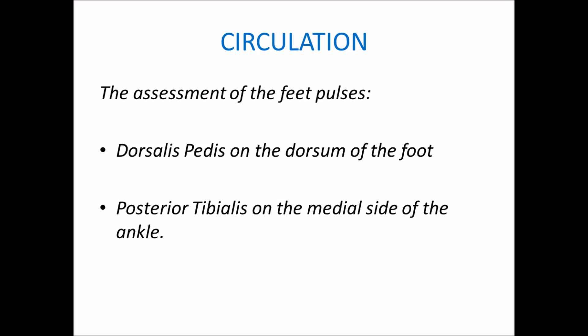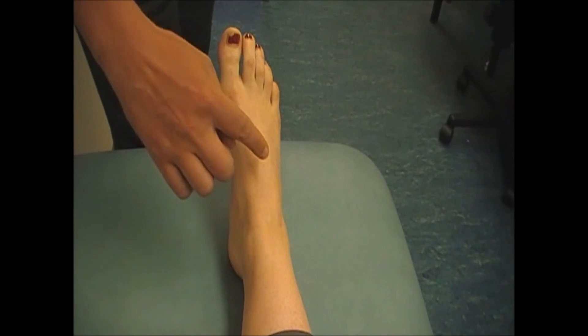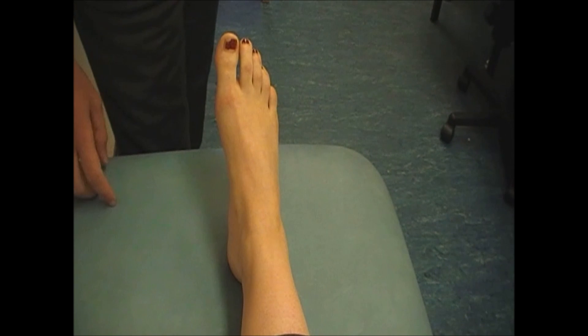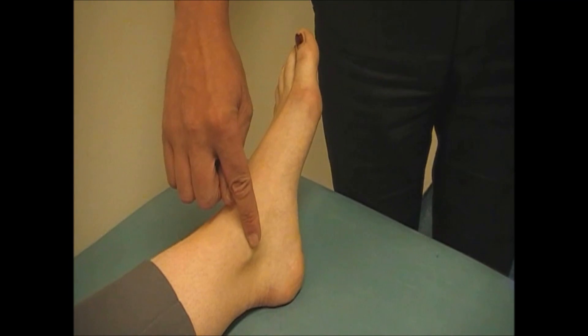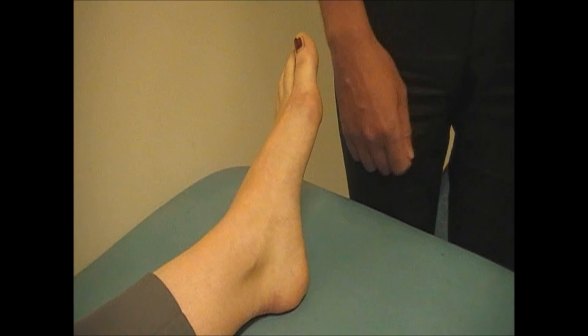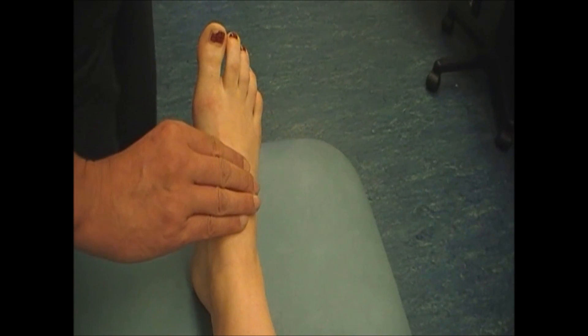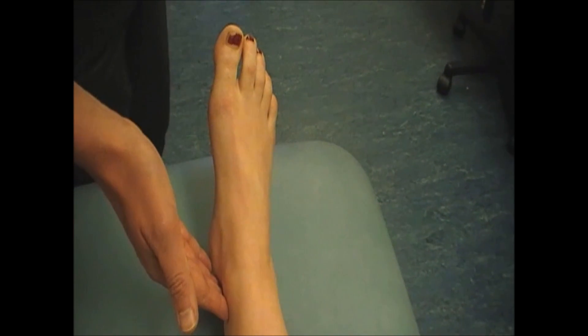The assessment of circulation focuses on the feet pulses: the dorsalis pedis on the dorsum of the foot and the posterior tibialis on the medial side of the ankle. The dorsalis pedis usually runs between the first and the second metatarsal bones. The posterior tibialis runs approximately two centimeters behind and below the medial malleolus, that is, the bony prominence on the inside of the ankle. To feel the pulses, explore these areas with your finger pads, applying gentle pressure. Normally, one should be able to feel both pulses.